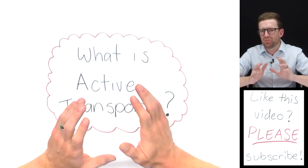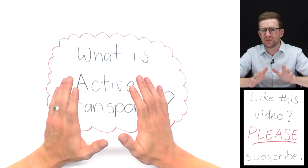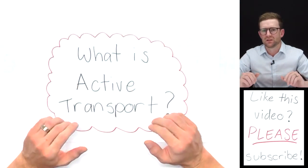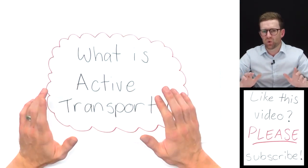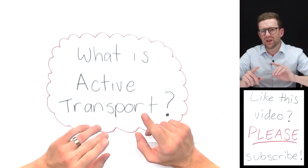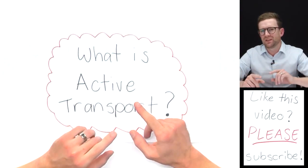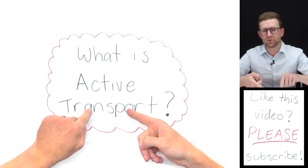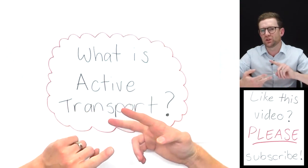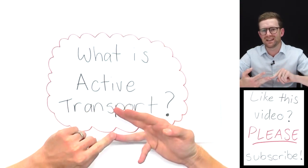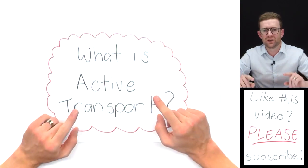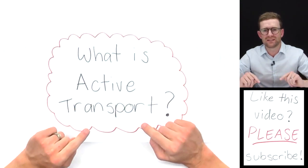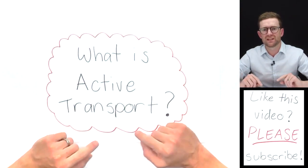Diffusion and osmosis are called passive processes because they happen without any energy being required. But there are some processes that require energy. They're called active processes, and there's a few: active transport, which I'm going to talk about today, and also endocytosis and exocytosis. This video is about the process called active transport.